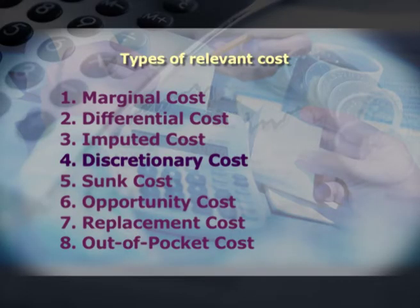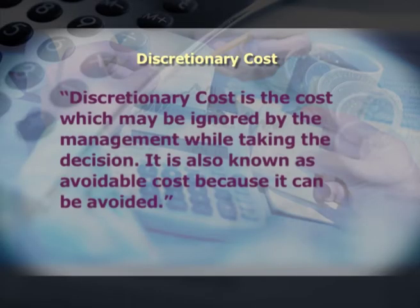Fourth is discretionary cost. Discretionary means flexible or optional — the cost which is considered an option in the hands of management, whether they choose to select it or not. It is relevant to decision making as one can reduce total cost by selecting another option or avoiding the present selection. Discretionary cost is also known as avoidable cost because it can be avoided. For example, in advertising, management may choose to use a new upcoming role model instead of an already well-known role model who charges more.